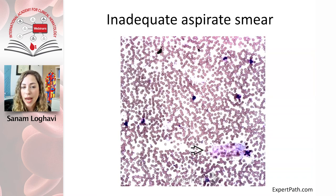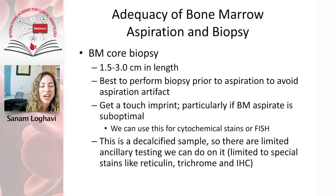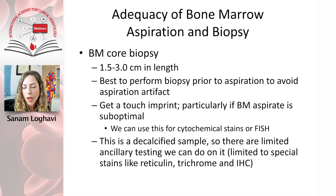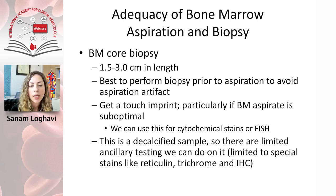On the other hand, this is an inadequate aspirate smear — it almost looks like peripheral blood, with only a few nucleated red blood cells, a few white cells, and no true spicules. For the core biopsy, ideally you want three centimeters in length, but practically we're happy with about 1.5 centimeters. It's best to perform the biopsy prior to the aspirate to avoid aspiration artifact. The core biopsy is great for getting a touch imprint, particularly if you have a dry tap, and that imprint can be used for cytochemical stains or FISH.